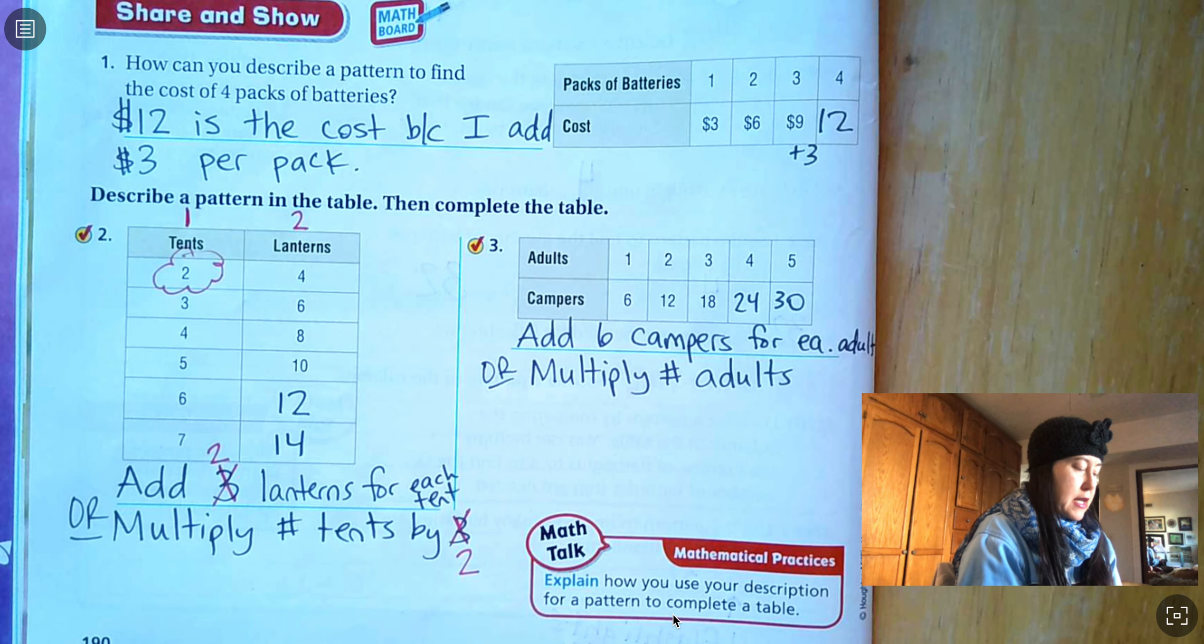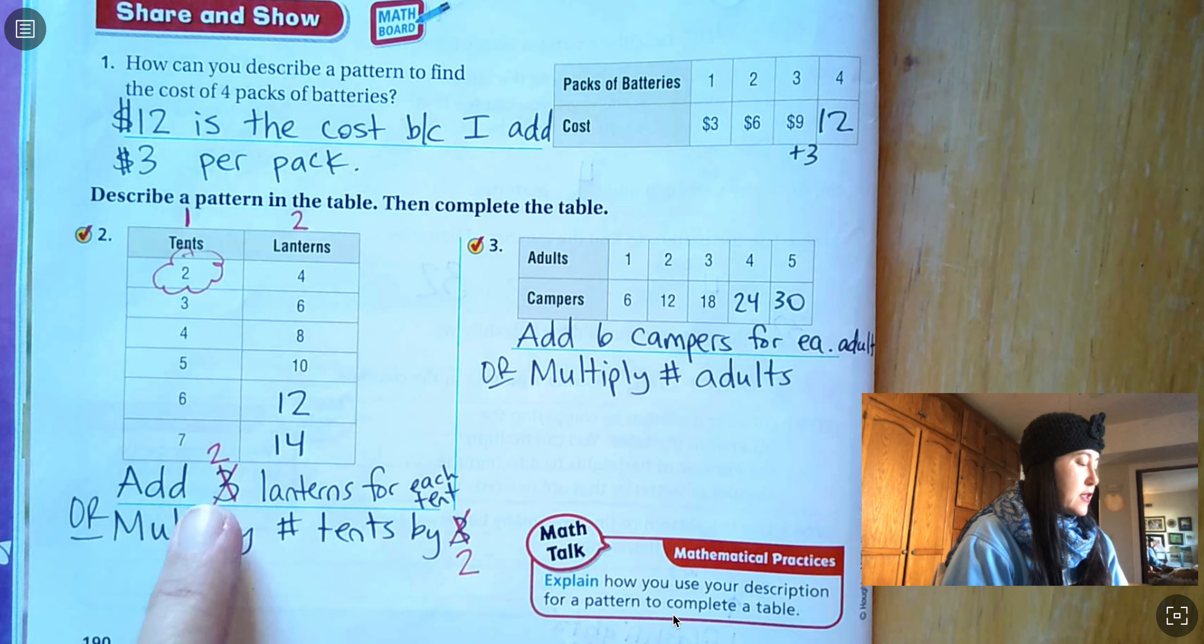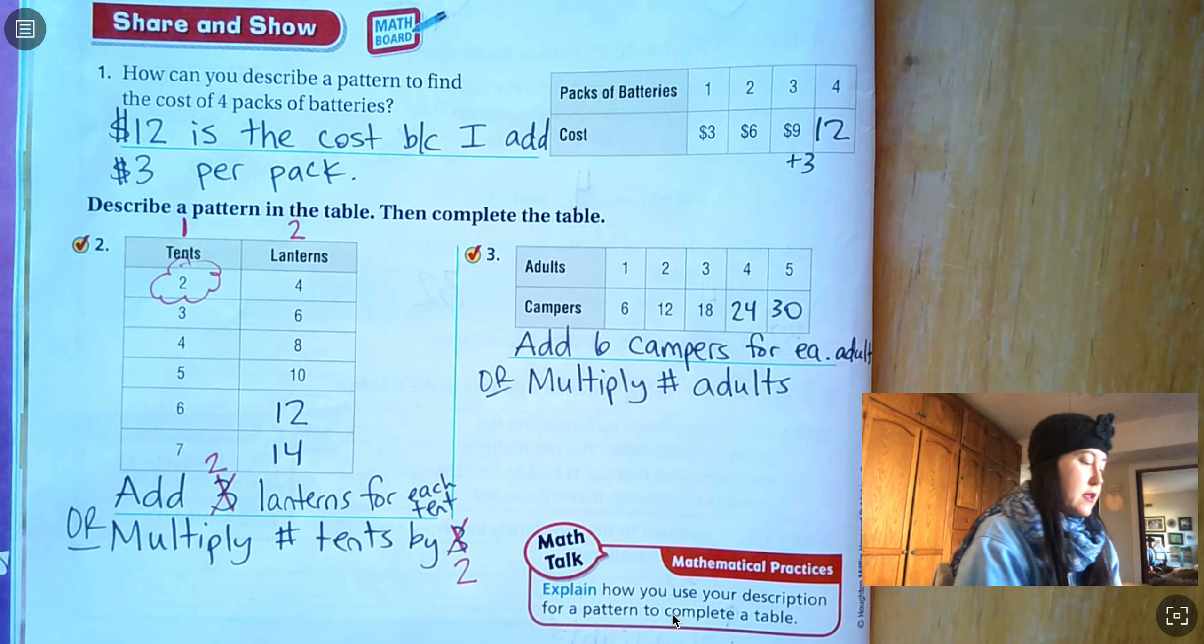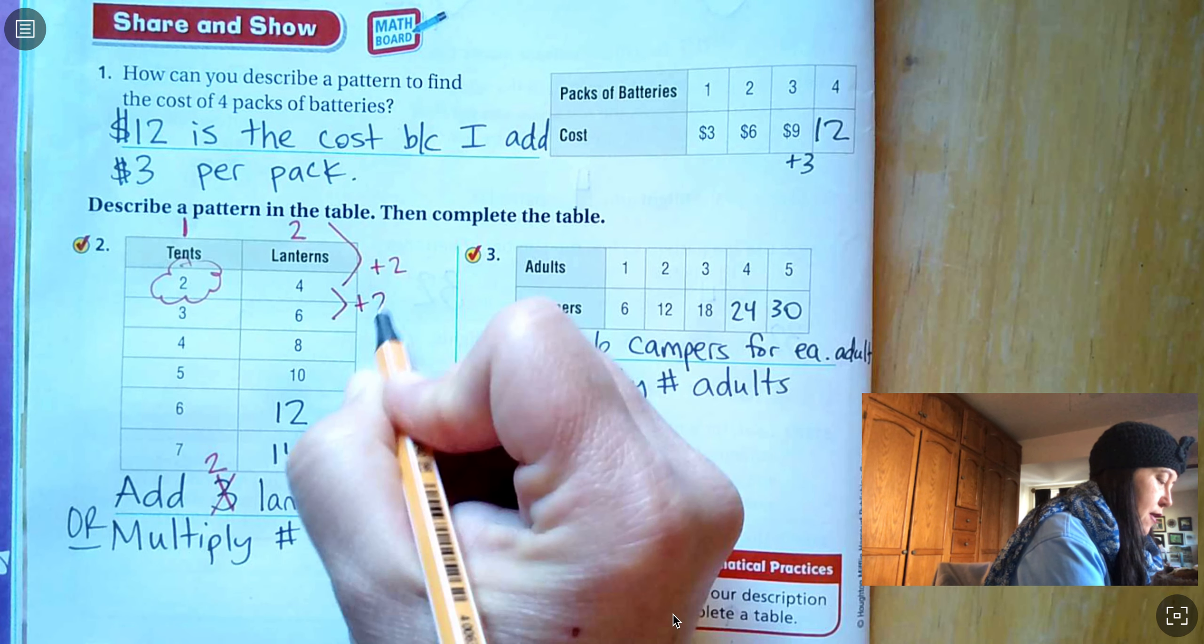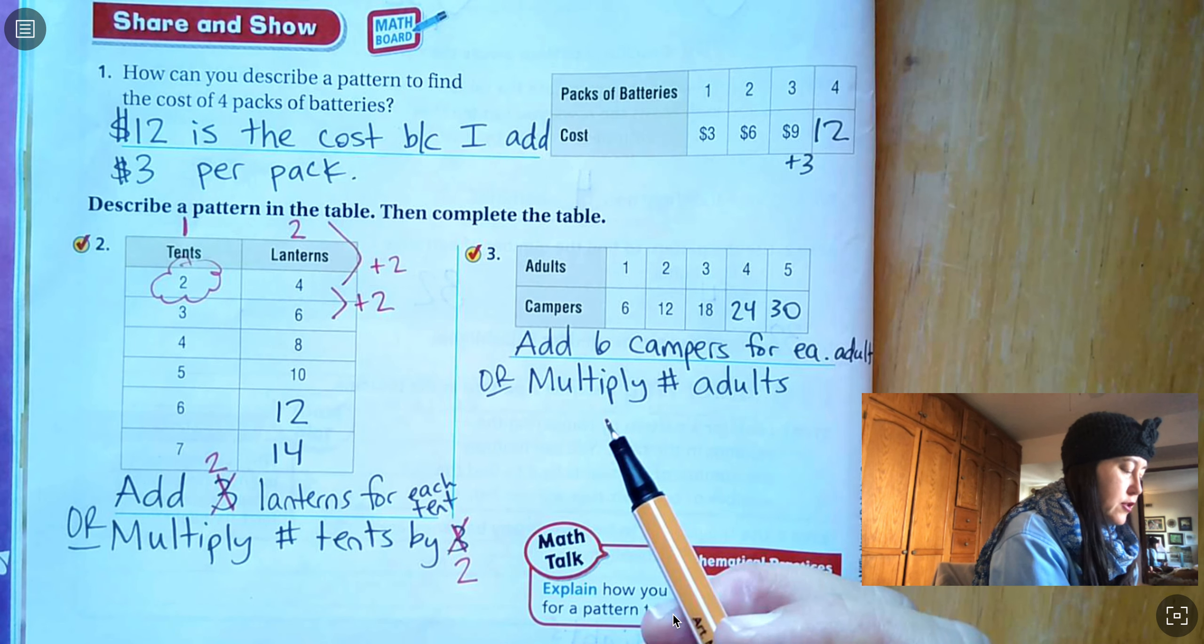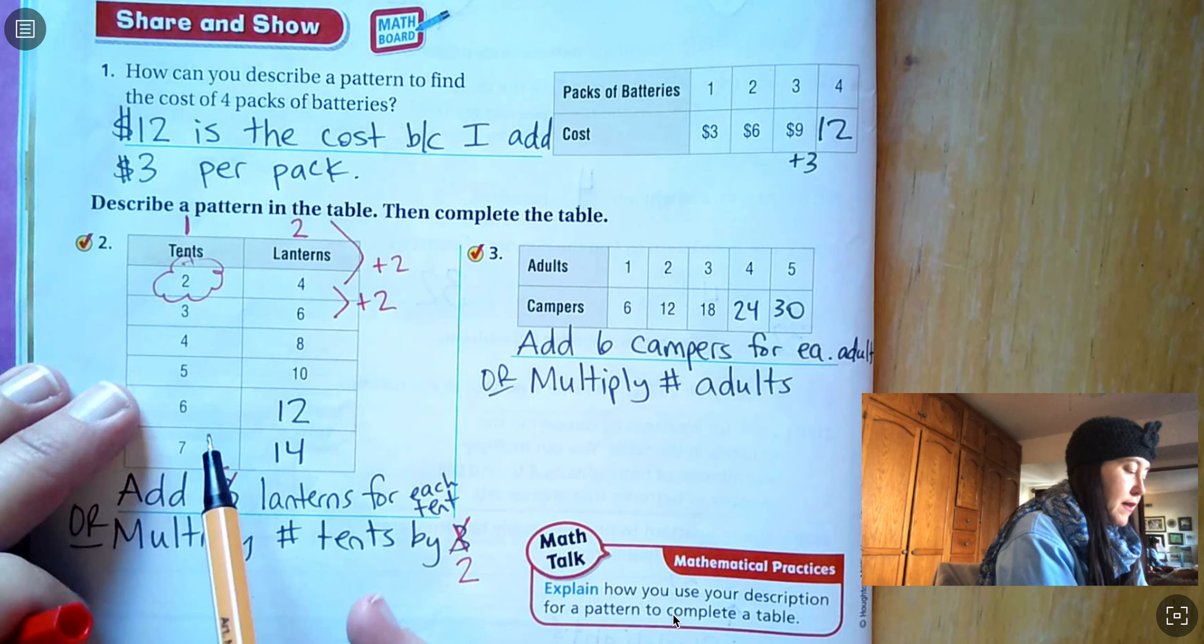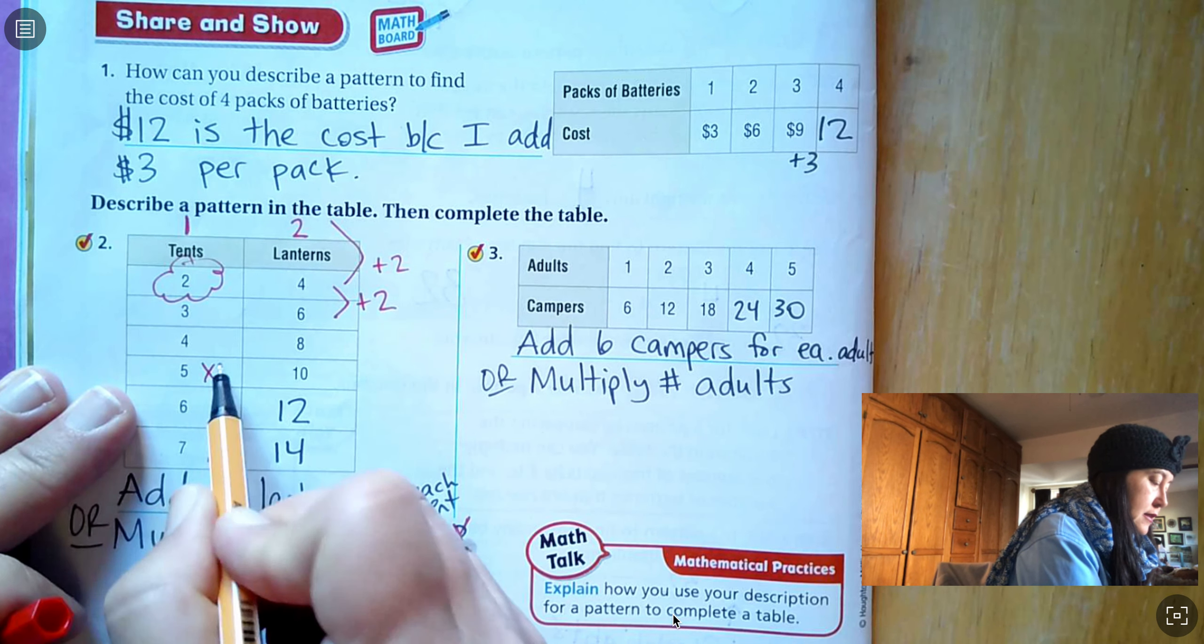And I made a goof, you could either add two lanterns for each tent, right? Plus two, plus two. Every time you add one tent, you'd add two lanterns. Or you can multiply the number of tents times two to get the number of lanterns. This is how we're using the table.